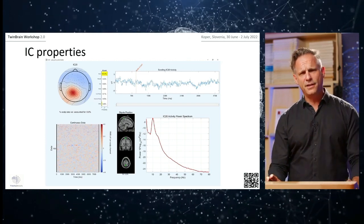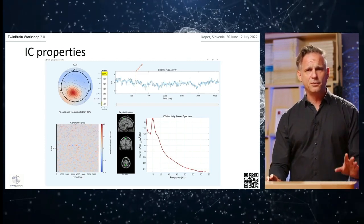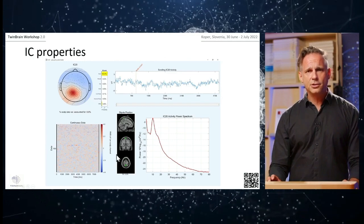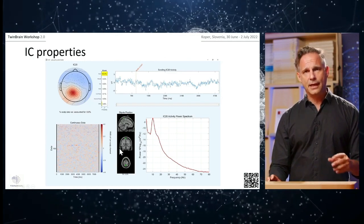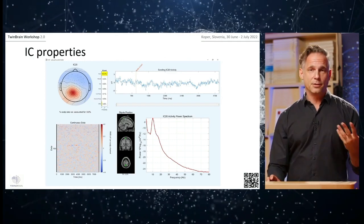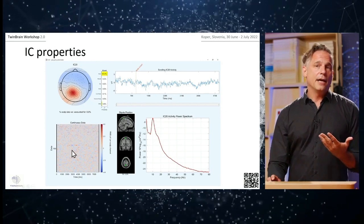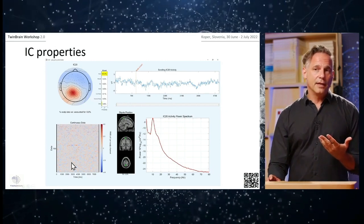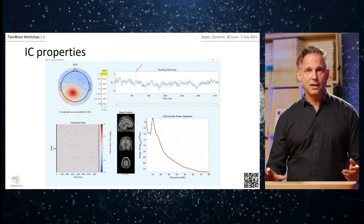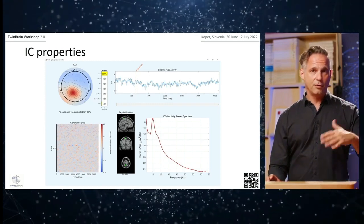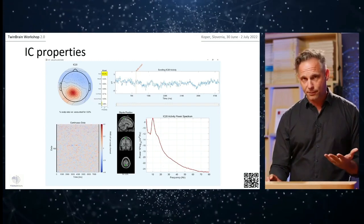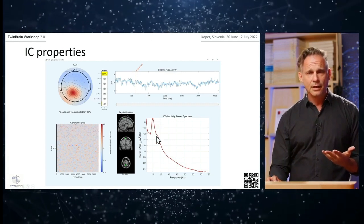With very few assumptions, you get additional information about the anatomical origin of the activity measured on the surface. You can also apply further computations on the IC time course — for example, transforming it into the frequency domain to get the spectrum.